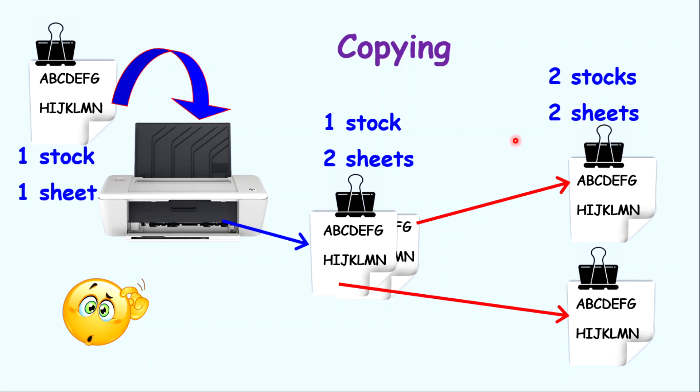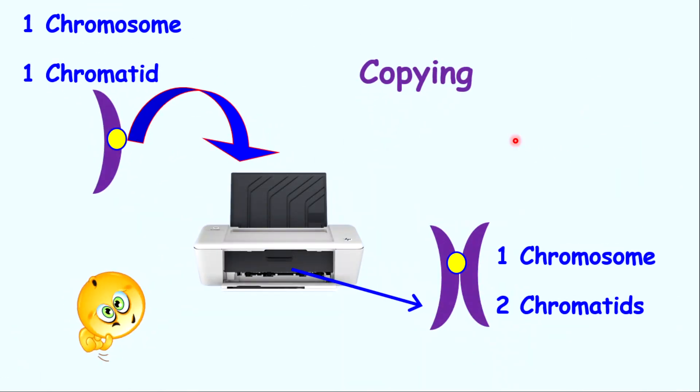Now let's apply this to chromosomes. In chromosomes, again, the centromere is like the binder. Will you copy the binder? Absolutely not. So let's say you start with one chromosome because you have one binder, as in a stock. And you start with one chromatid, as in a sheet of paper, with the information. You're going to copy the information part.